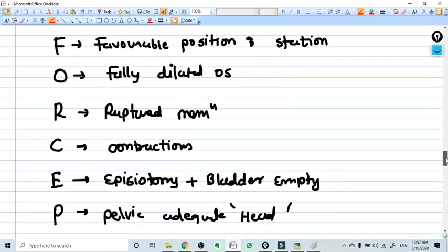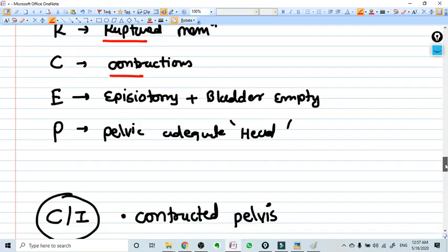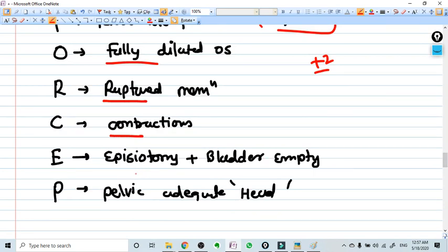Remember the very old mnemonic of prerequisite conditions for forceps is FORCEPS. You can see here F means favorable position and station. What is favorable position? Vertex position and station is more than or equal to plus two. O means fully dilated OS. R, ruptured membrane, the membrane should be ruptured already. There should be some contraction of the uterus. Without contraction you cannot apply the forceps.